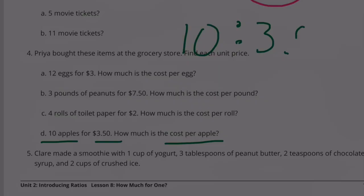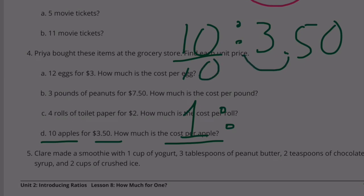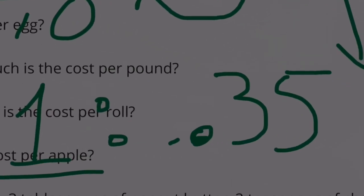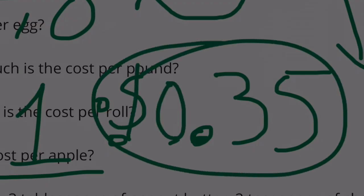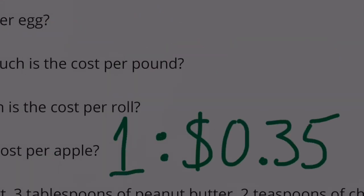(d) Ten apples for $3.50. We want the price per apple, so divide both sides by ten. To divide $3.50 by ten, I move the decimal one place to the left, making it ten times smaller. That gives us $0.35. So one apple costs thirty-five cents.